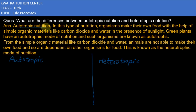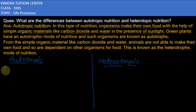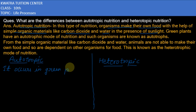In autotrophic nutrition, organisms make their own food with the help of simple inorganic materials like carbon dioxide and water in the presence of sunlight. Autotrophic nutrition occurs in green plants and green algae.